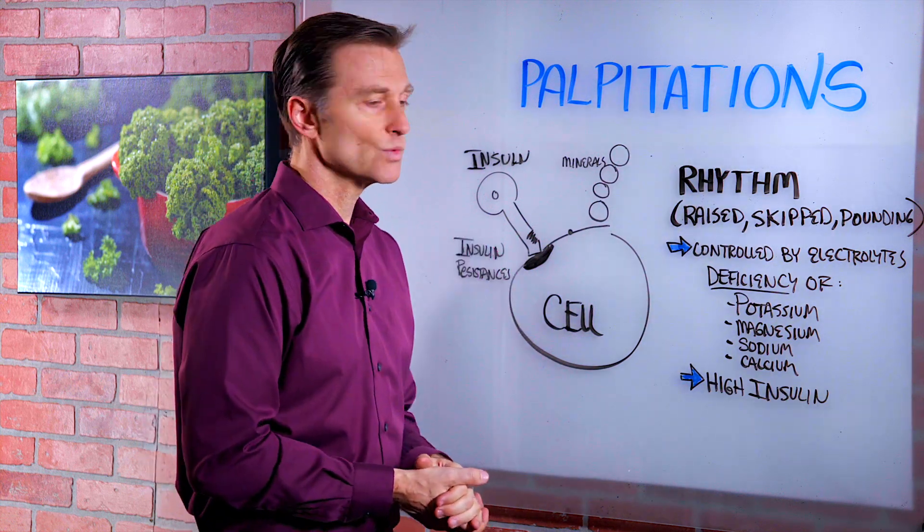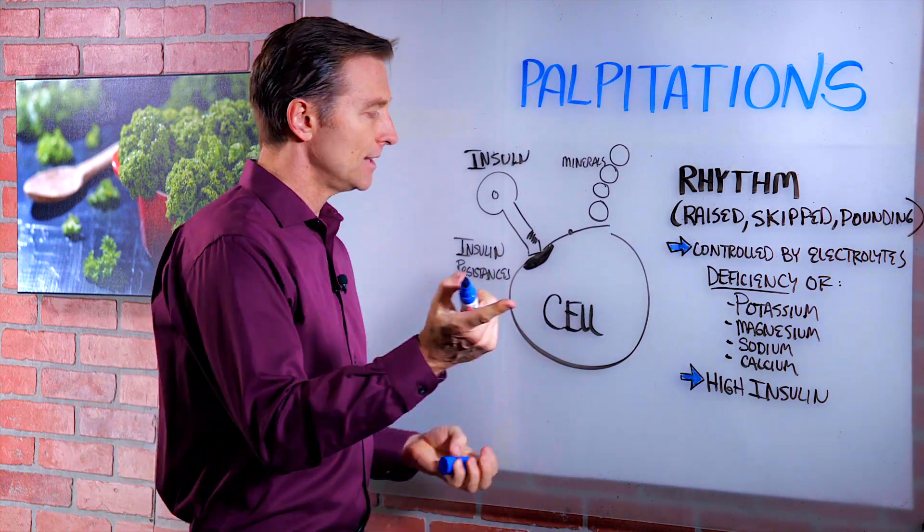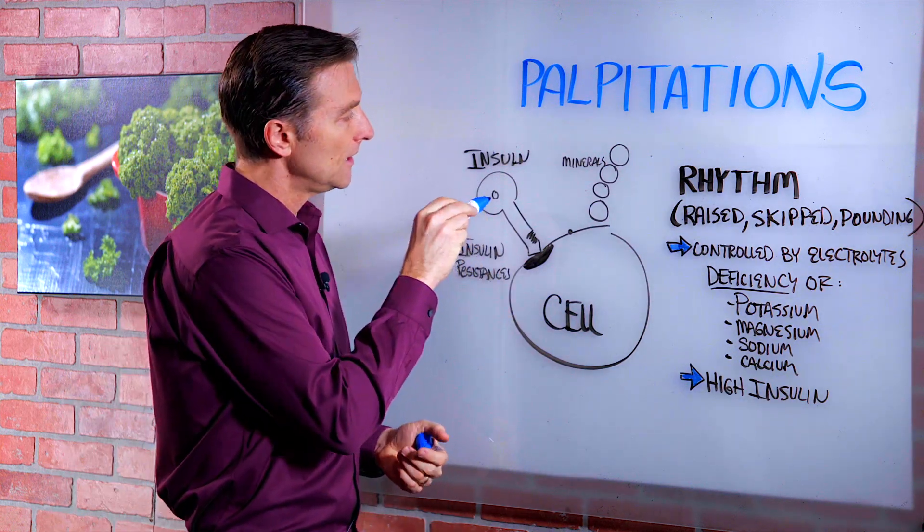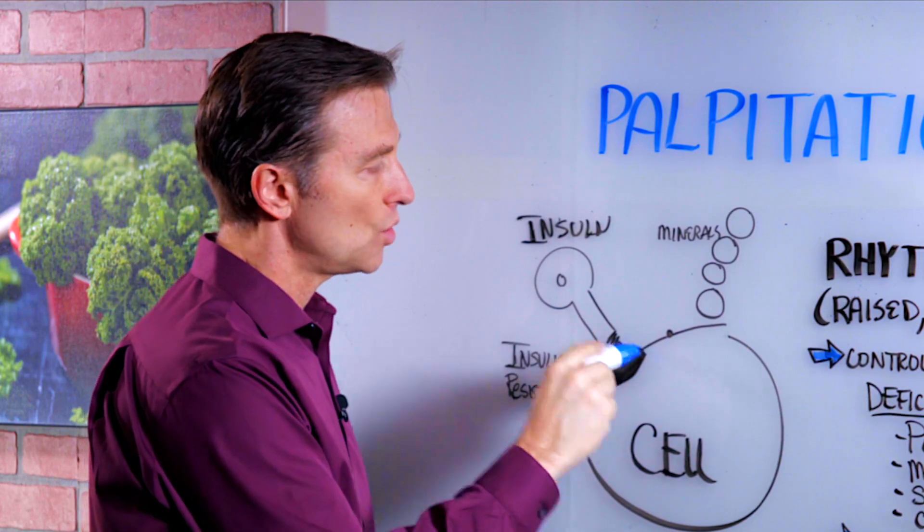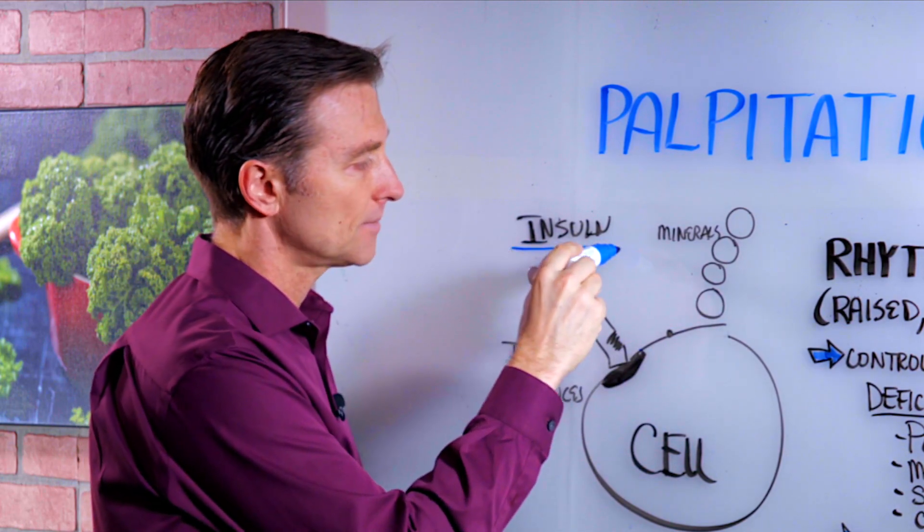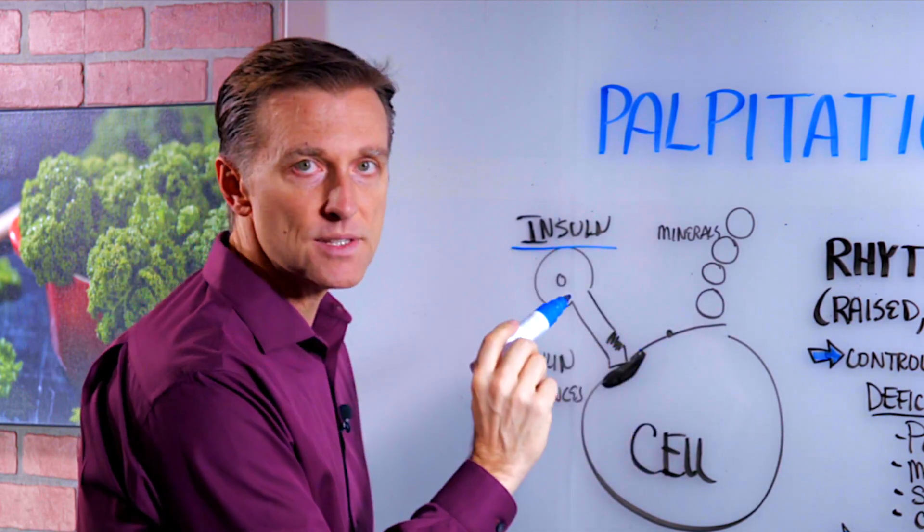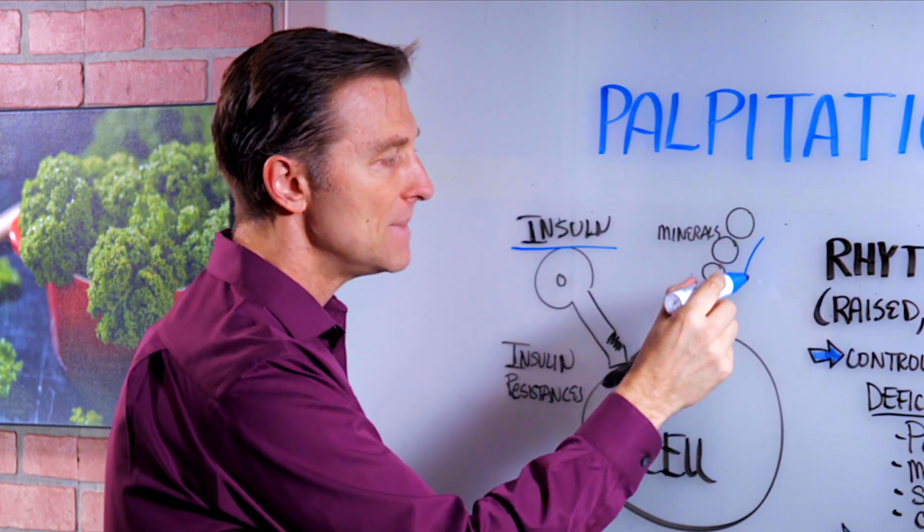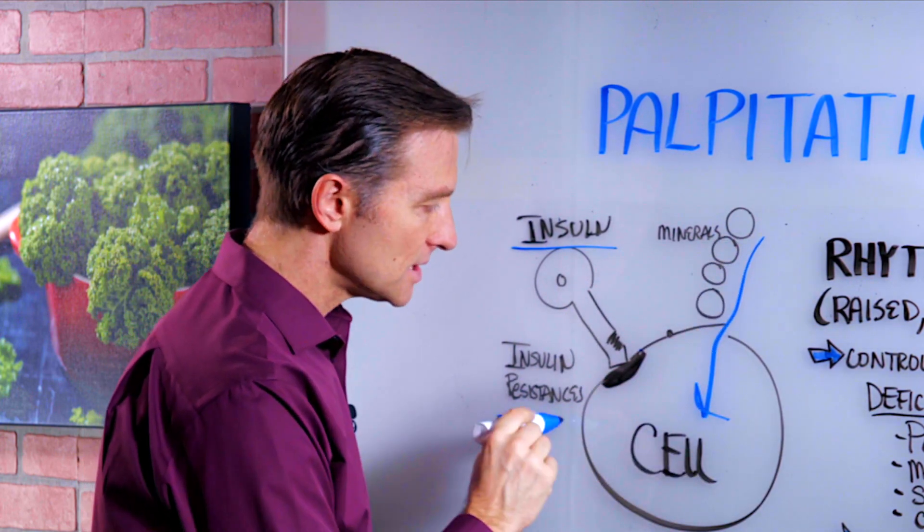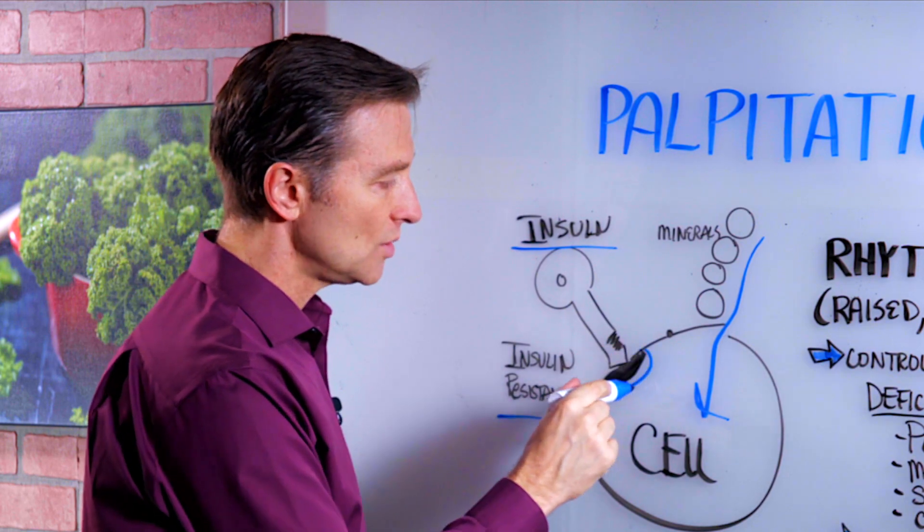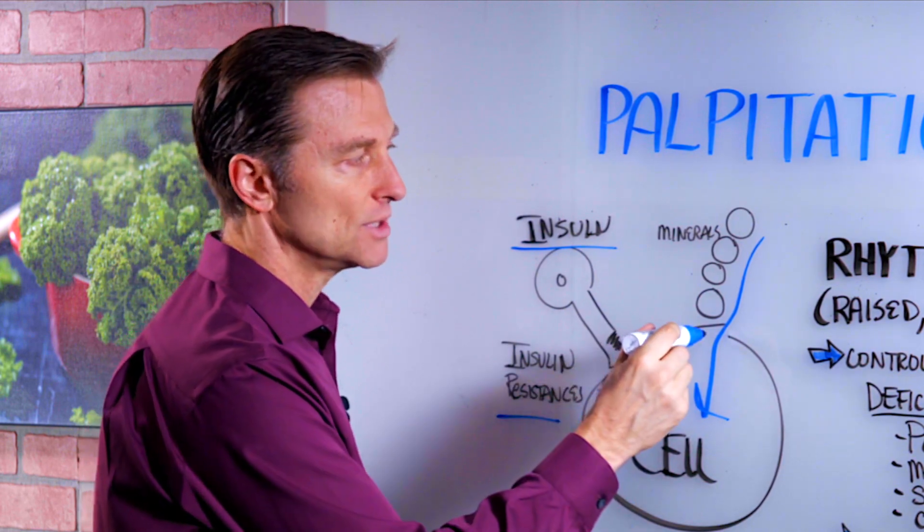One is you have insulin resistance. Now, again, you've probably seen this in other videos. The key to open up the cellular door is called insulin. One of the purposes of insulin is to help you absorb minerals into the cell. Insulin resistance is a situation where it doesn't connect and it doesn't open the door.